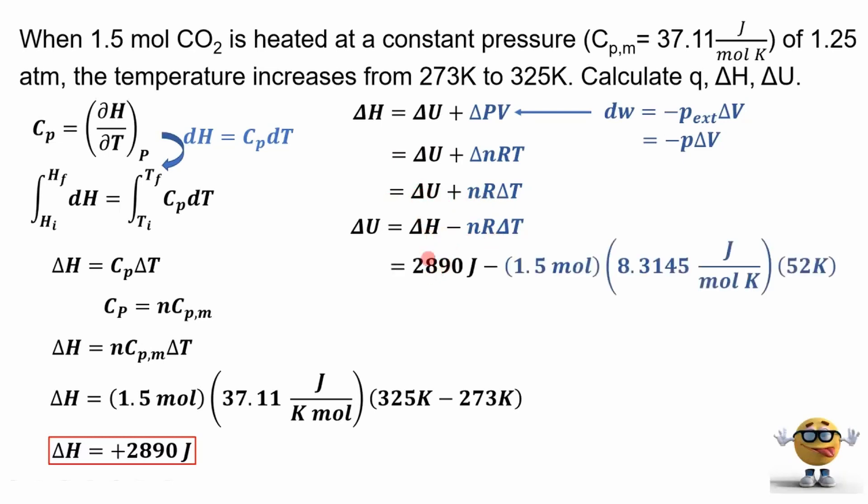And at this point, we can plug in our numbers. So the change in enthalpy is 2,890 joules minus our n, our r, and our t, which is the difference, this difference right here. And if we plug that in, we get plus 2,241 joules. So the system gains energy, and that makes sense because it heats up.